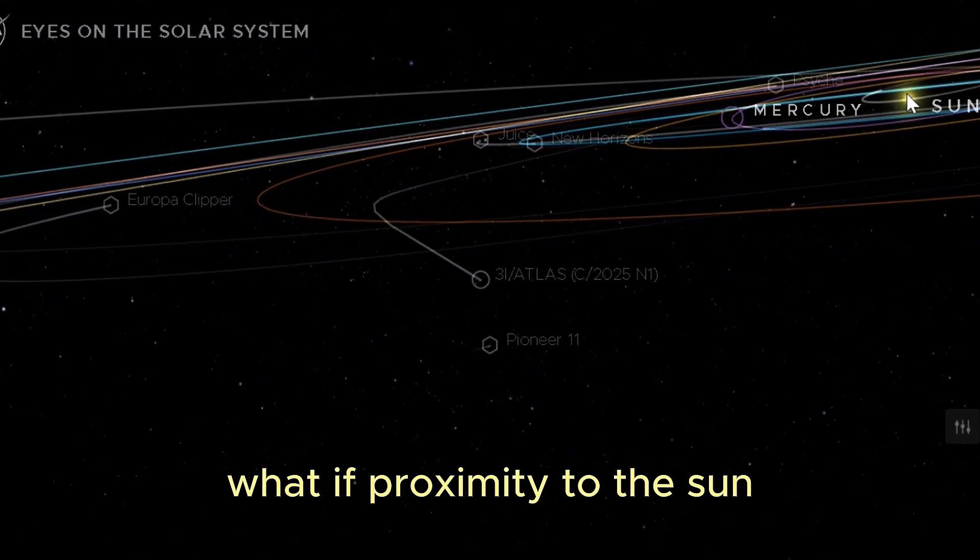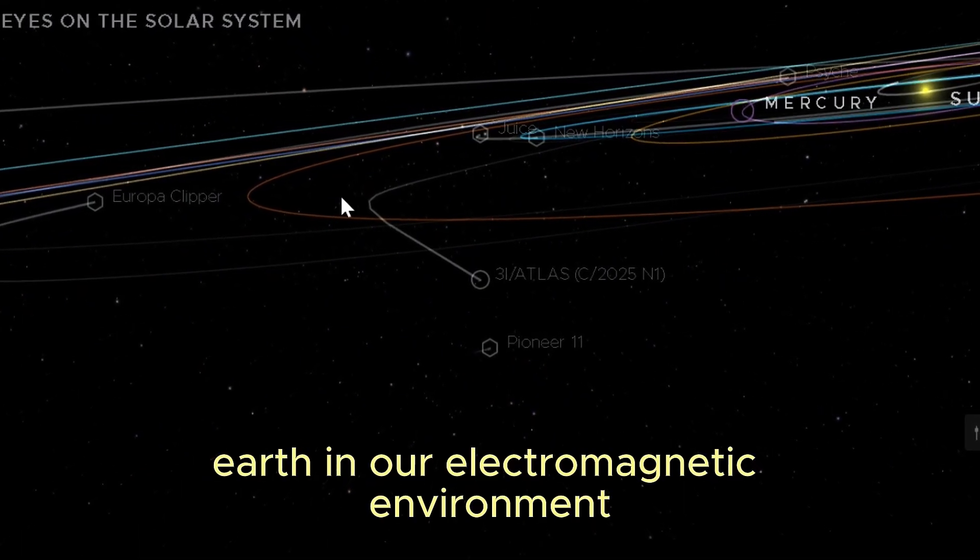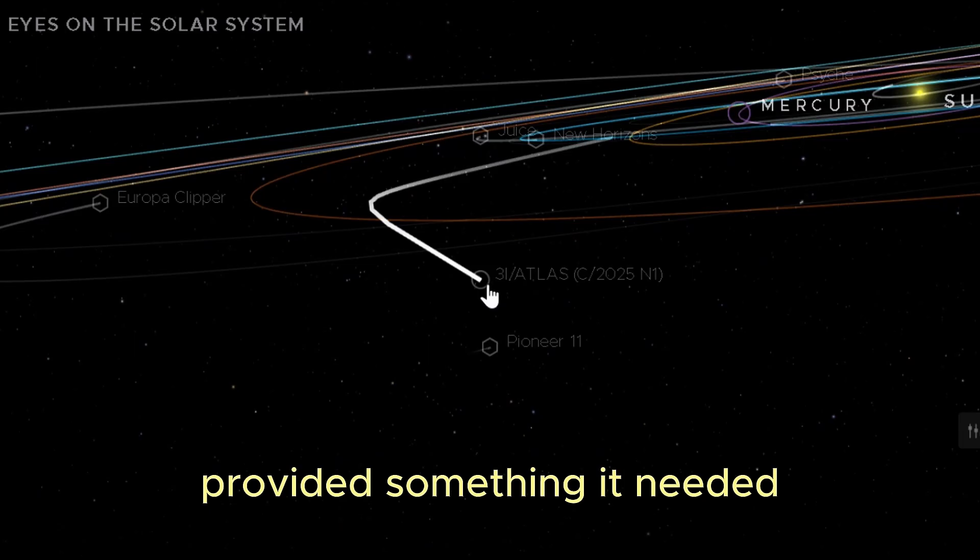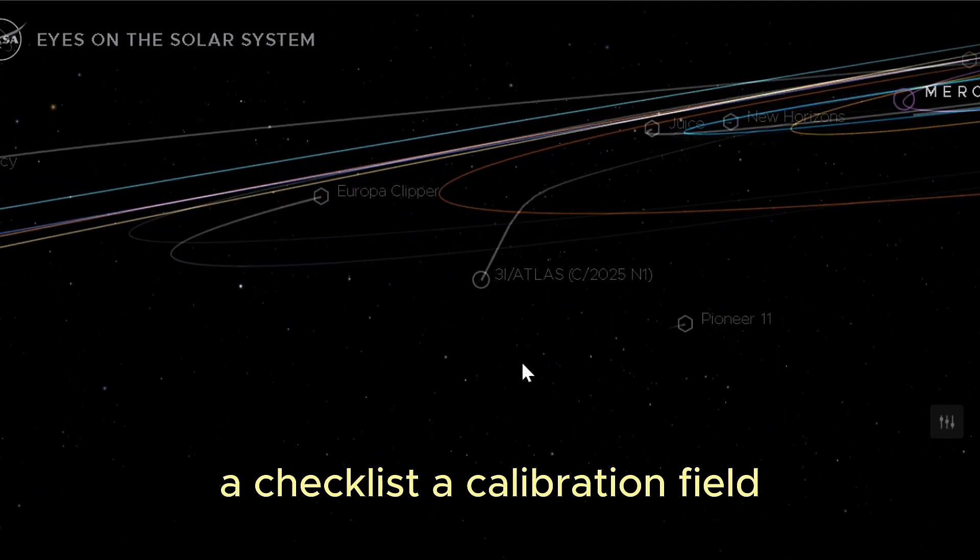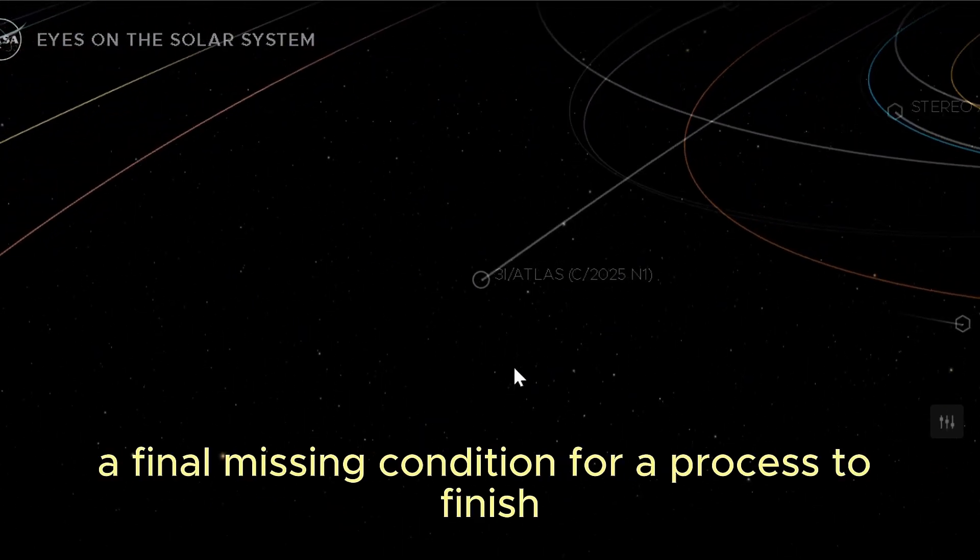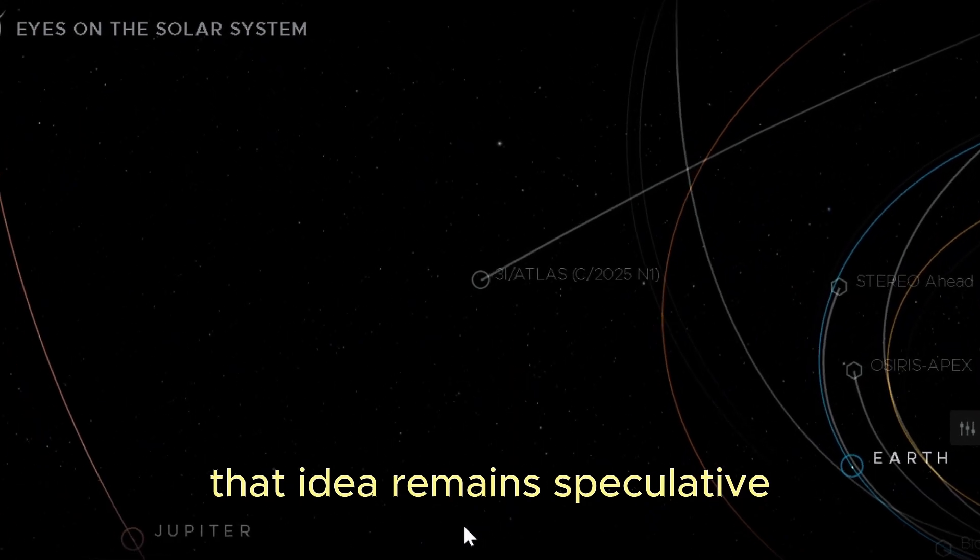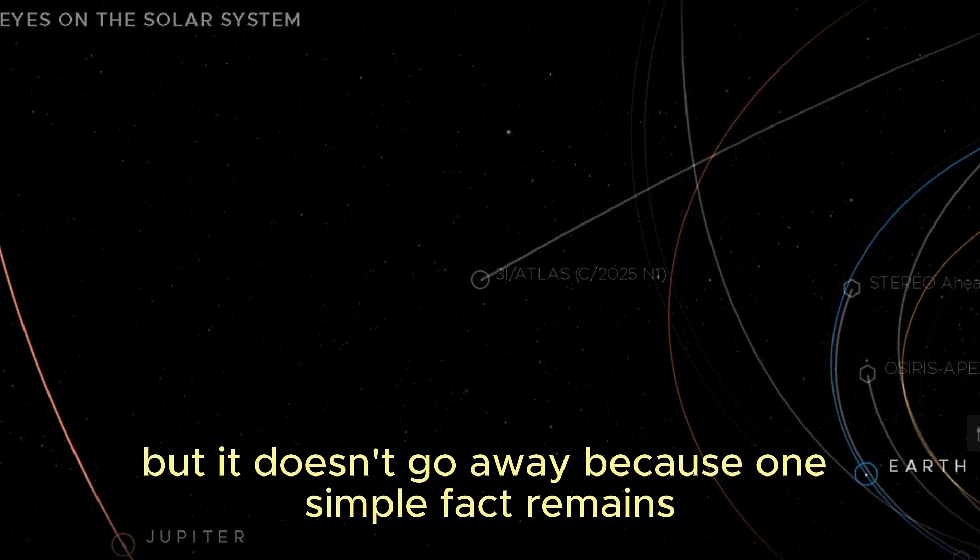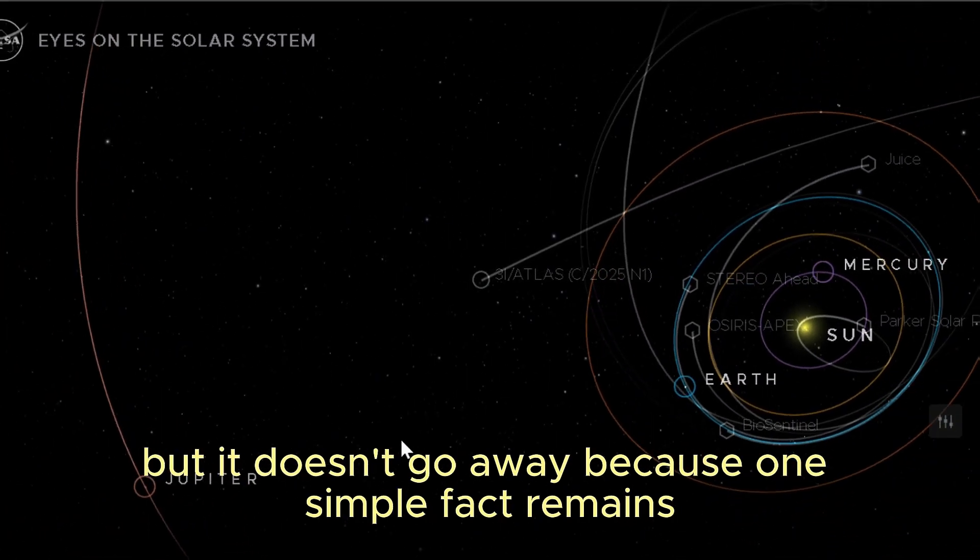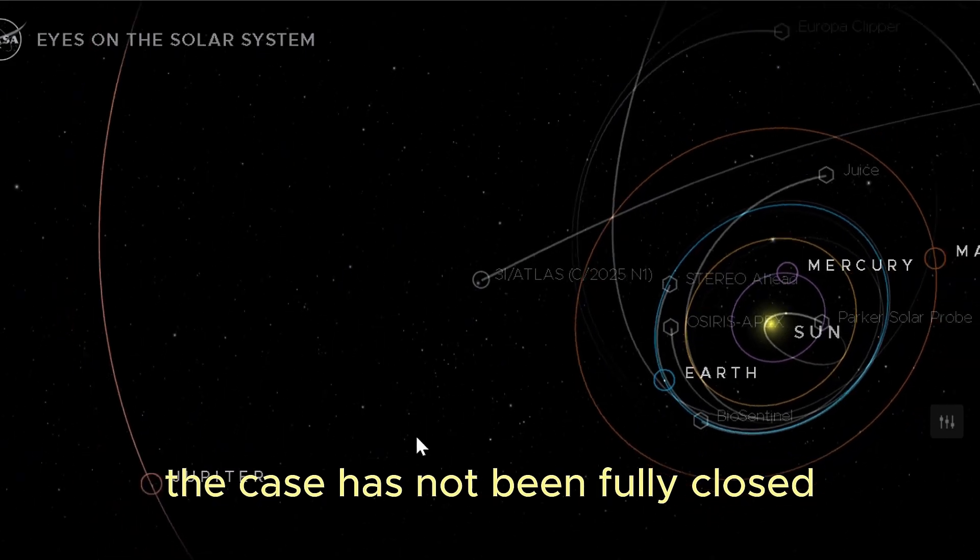What if proximity to the sun, Earth, and our electromagnetic environment provided something it needed? A checklist, a calibration field, a final missing condition for a process to finish. That idea remains speculative, but it doesn't go away, because one simple fact remains: the case has not been fully closed. Agencies do not quietly monitor objects that are truly irrelevant.